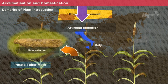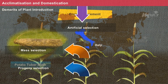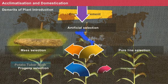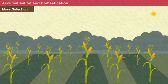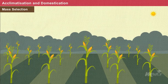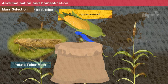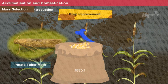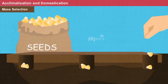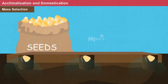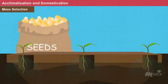The four types are: mass selection, progeny selection, pure line selection, and clonal selection. In mass selection, healthy plants are selected from a mixed group of crop population, followed by collection of seeds. The collected seeds are then processed for multiplication. This method of selection is known as mass selection.